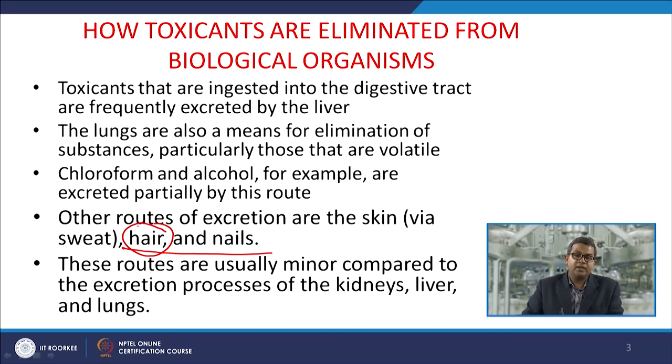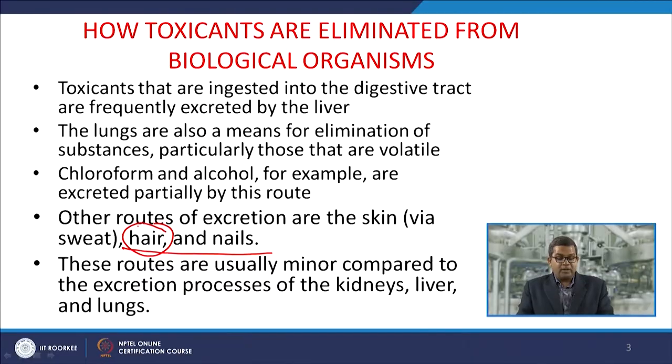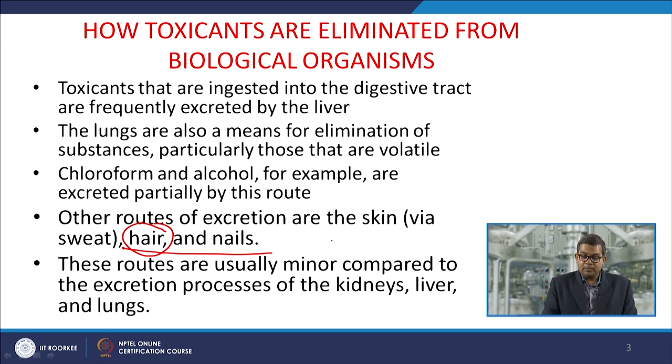One of the most prominent historical cases is the toxification of Napoleon Bonaparte, who was given a regulated quantity of arsenic. After his death, his hair was analyzed by a physician and they found he had been toxified by arsenic. These minor routes are usually less significant than kidney, liver, and lungs, but their importance cannot be overlooked.